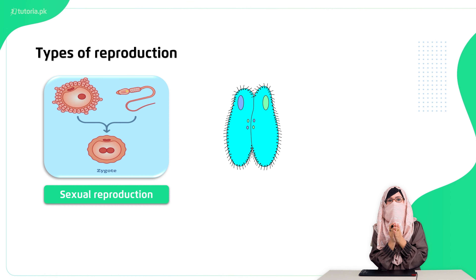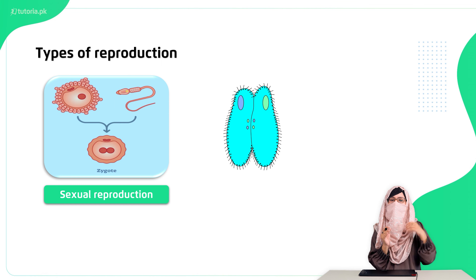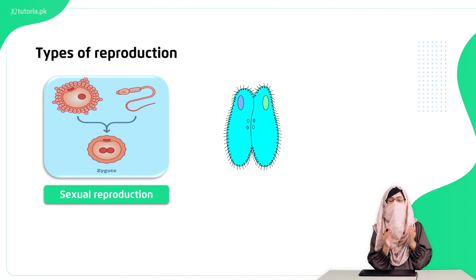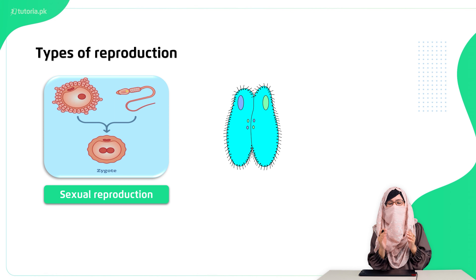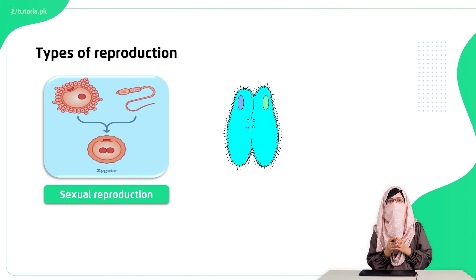The first type is sexual reproduction. In sexual reproduction, there are two individuals involved — a male, which produces sperm, and a female. This is a type of reproduction in which two individuals are involved to produce an offspring.